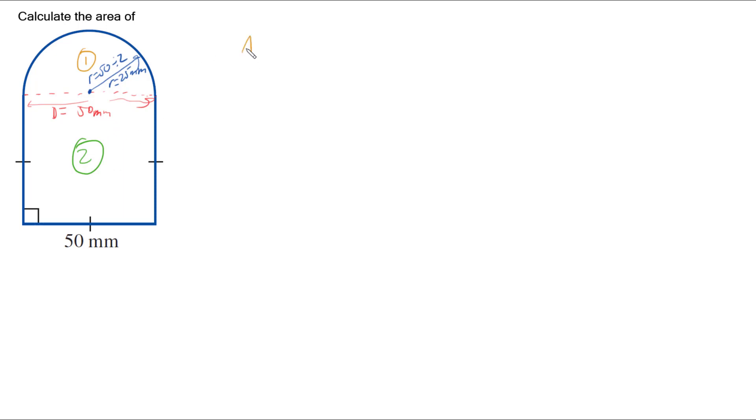So for the first one, we've got half a circle. Area 1 is half a circle, and it's this half circle where I've got a radius of 25mm. And the angle that I've got within my circle for half a circle is 180 degrees worth of a circle.